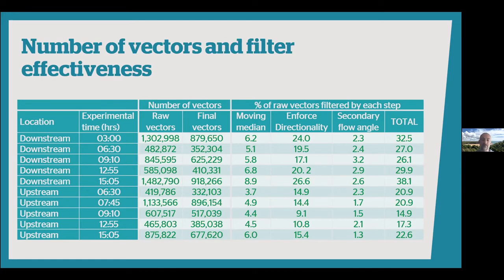I also enforced directionality because all flows should have been moving downstream, and I filtered out any cross-stream flows forming an angle greater than 75 degrees from the downstream direction. You can see the statistics on the number of vectors filtered out, but when looking at the remaining vectors, it actually didn't have a significant impact on what we got.